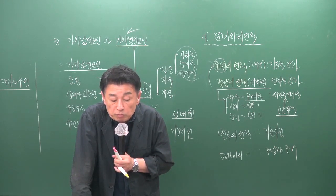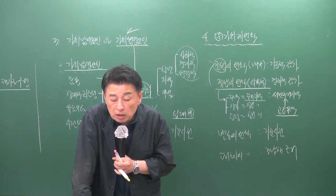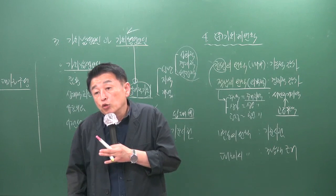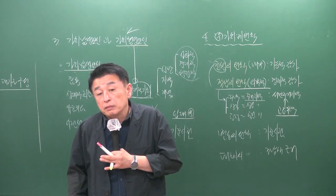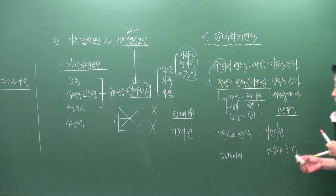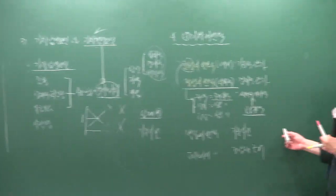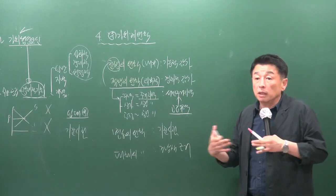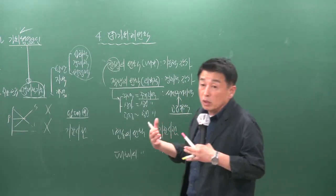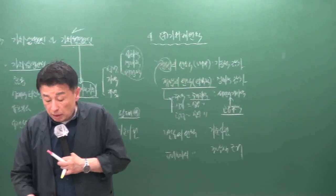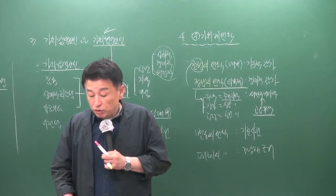11번 5번 보기에서 부지와 건물 등 구성요소 간의 적응 상태를 분석하는 것은 적합의 원칙이 아니라 균형의 원칙(준형의 원칙)입니다. 대지 면적에 비해 건물의 연면적이 너무 넓게 들어가 있으면 밸런스가 맞지 않으며, 이를 확인하는 것이 균형의 원칙입니다.